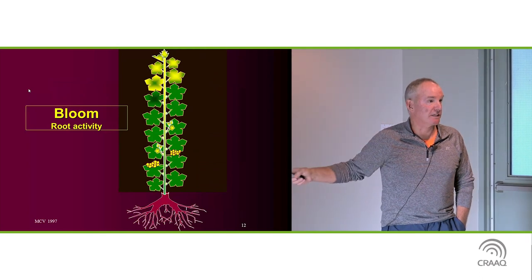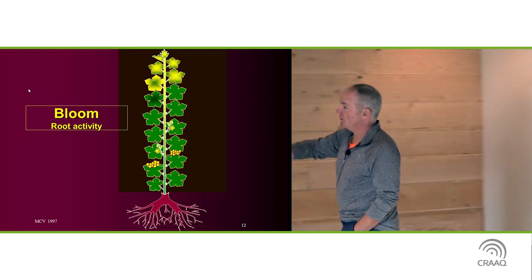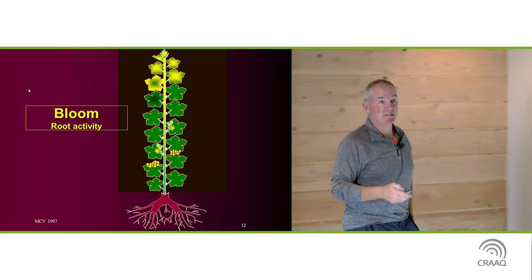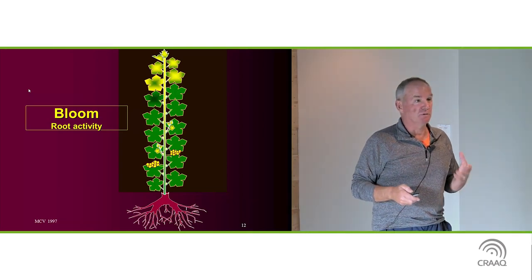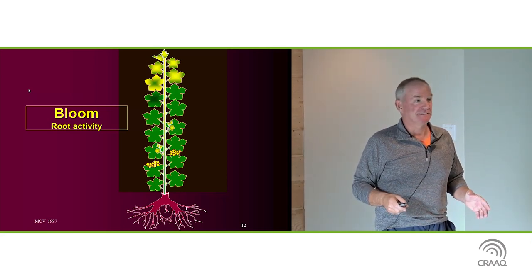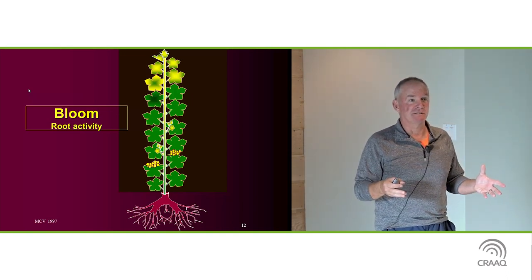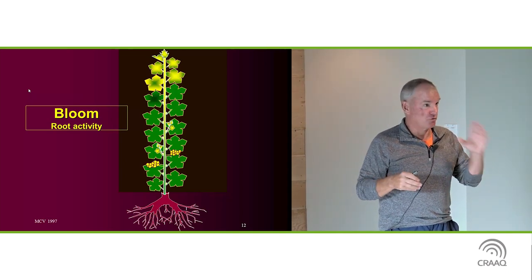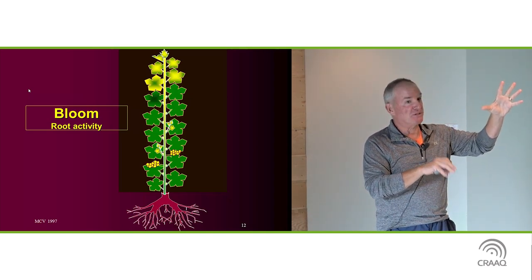At bloom, there is a lot of root activity at the same time. But again, you have a larger number of leaves going backwards with only a few leaves demanding at the tip. And generally at bloom, you will not see through the bloom period any new leaves develop. The plant will focus all of its energy on flowering and fruit set. People look at me at times and say, but it's true. If you look at that shoot and it's flowering, no new leaves show up until it's finished flowering.